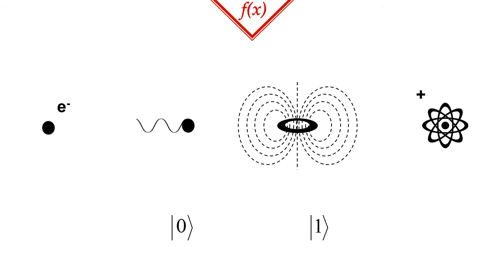These states can be specific positions where the system can be, specific energies it can have, polarizations that we can distinguish, etc.